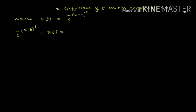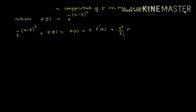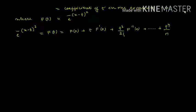F(t) can be expressed using Taylor series as F(0) + t·F'(0) + t²/2! · F''(0) + ... + t^n/n! · F^(n)(0), and so on. This is using the Taylor series expansion.